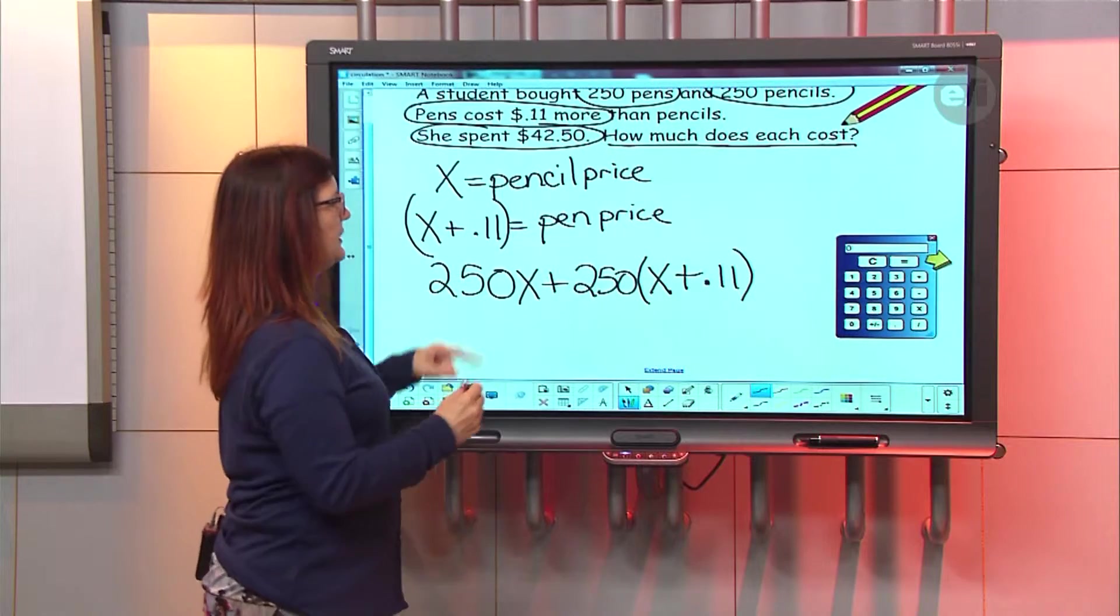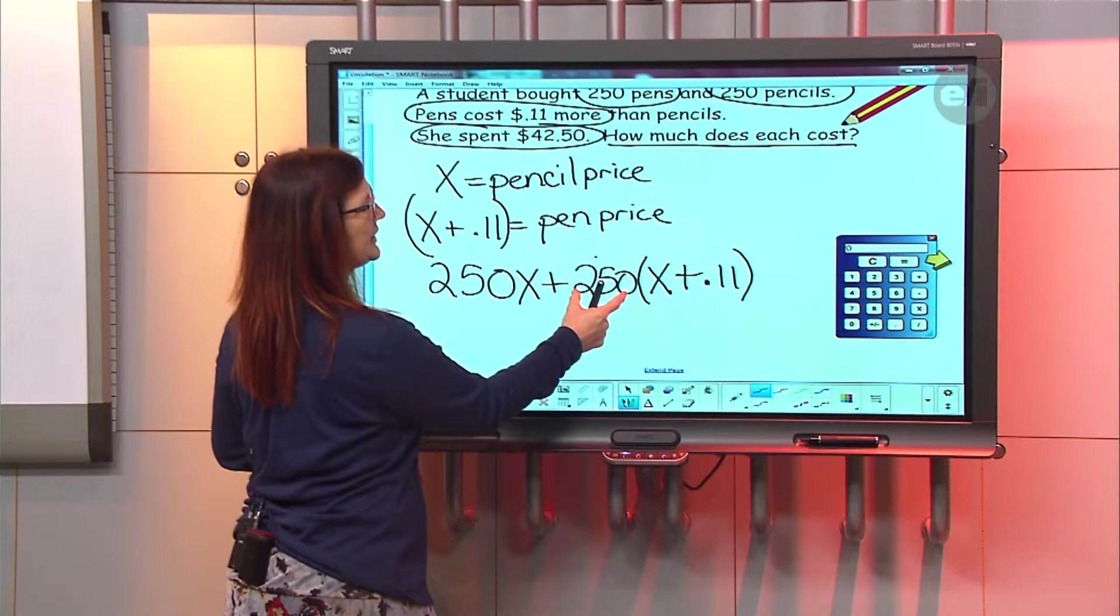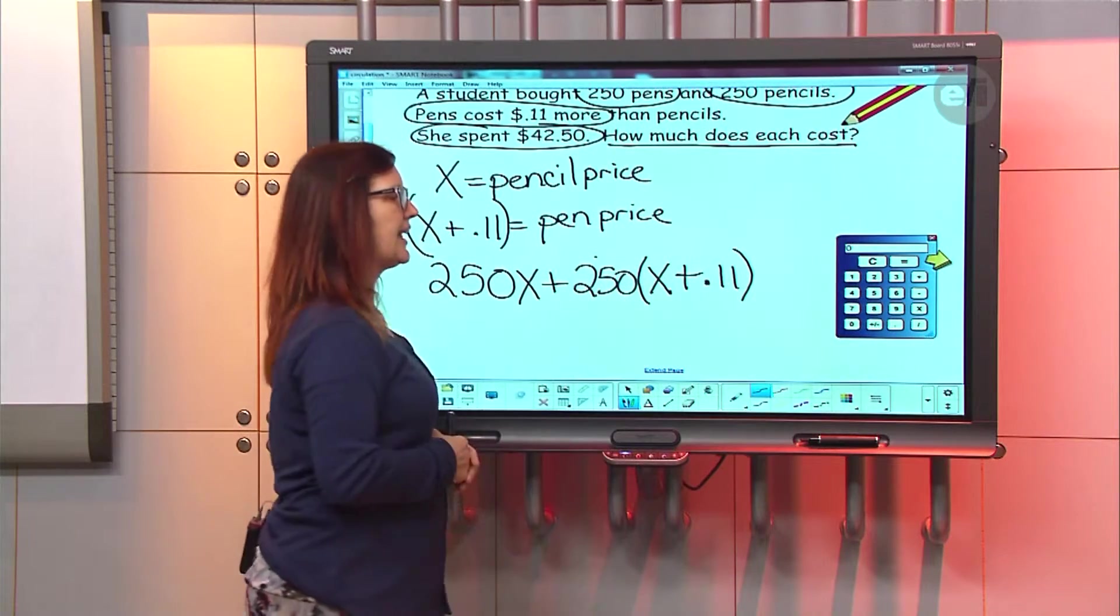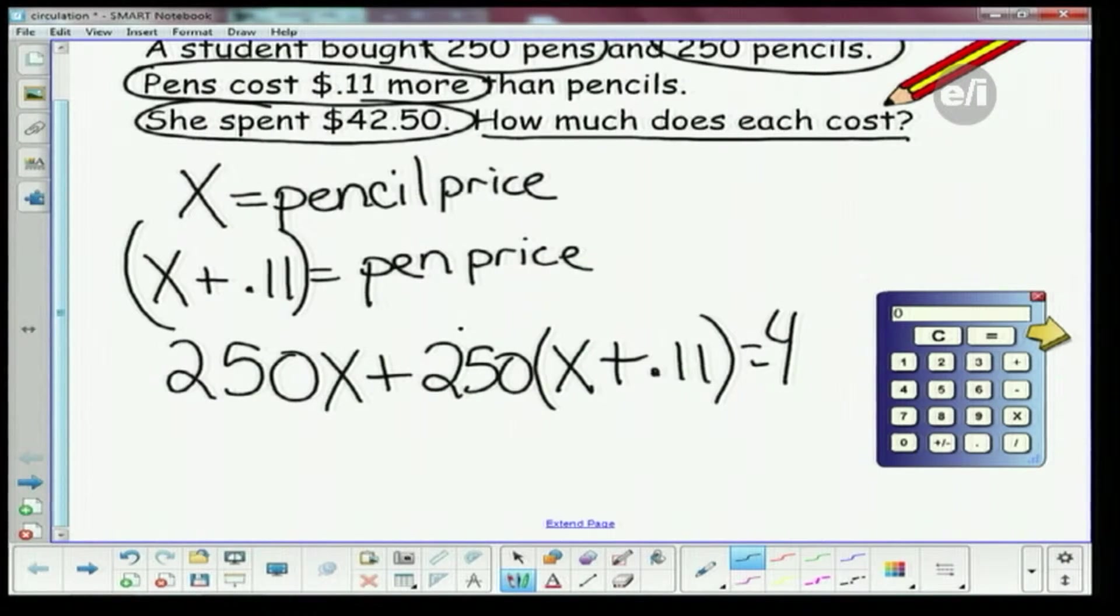Alright, so this part here stands for the pencils. This part over here stands for the price of the pen - 250 pens, and the pens are the price of a pencil plus 11 cents. And we know that this is going to equal our total, which is $42.50. You with me? Yeah.